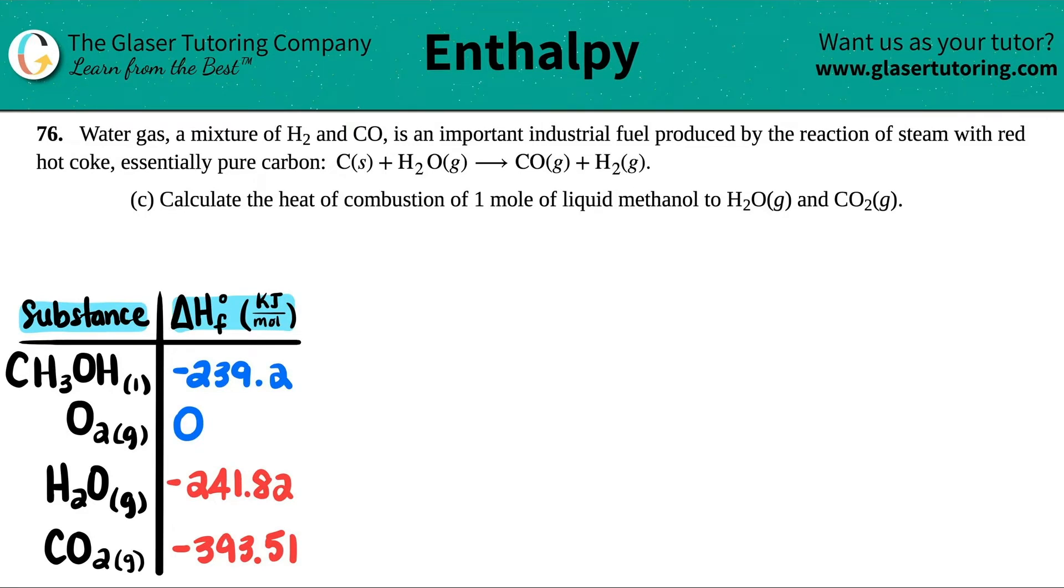Number 76: Water gas, a mixture of H2 and CO, is an important industrial fuel produced by the reaction of steam with red hot coke, essentially pure carbon. We're doing letter C, so if you need A and B, just go back a couple of questions on the playlist. We did A and B and now we're moving on to C.